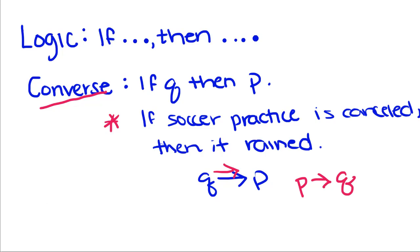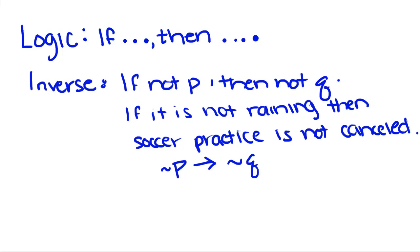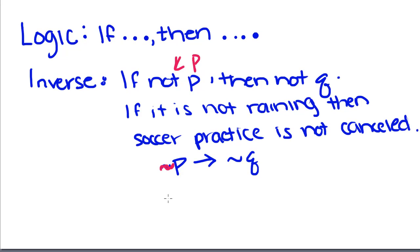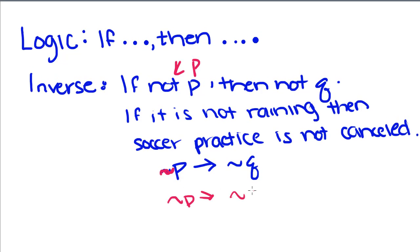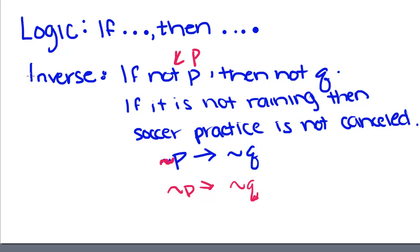Now we're going to talk about another statement called the inverse, where you take the opposite of the first action, and say that if not P then not Q. This little symbol right here means you negate it, which just means when you put 'not' in front of P you're negating the action. So if it is not raining, then soccer practice is not canceled. So not P implies not Q, but you have to be